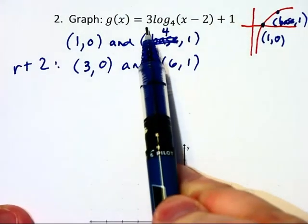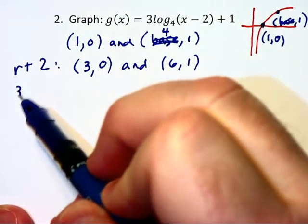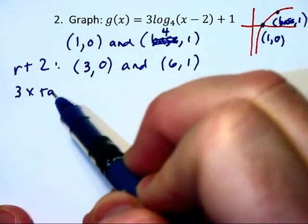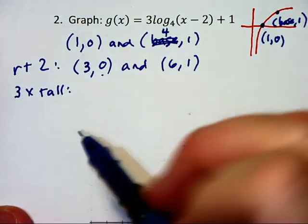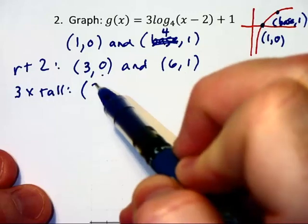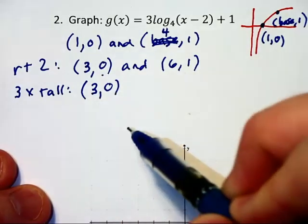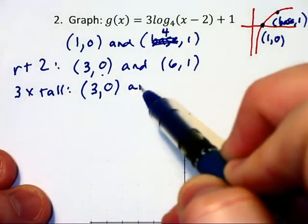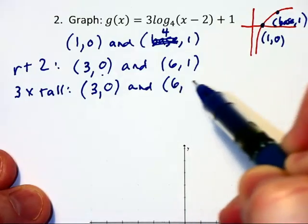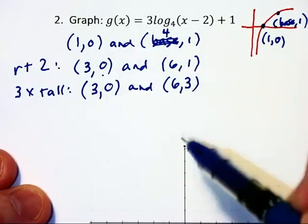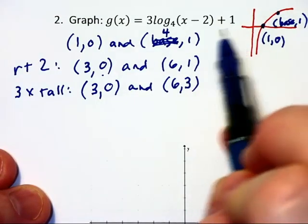Then we have the 3 out front, which basically says this is going to be 3 times as tall. So we'll take the y-coordinates and multiply by 3. We still have (3,0) because 0 times 3 is 0, and the next point transforms to (6,3) because 1 times 3 is 3.